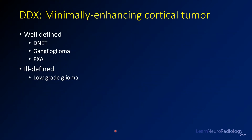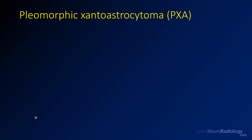The differential for a minimally enhancing cortical tumor includes DNET, ganglioglioma, and PXA. PXAs more commonly have more enhancement, so you'd probably favor the top two. Low-grade glioma is certainly always in the differential, but you'd favor DNET or ganglioglioma. This one turned out to be a polymorphic xanthoastrocytoma. As I said, you're not always going to be able to tell the difference between these tumors.